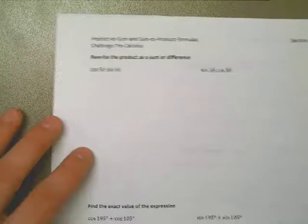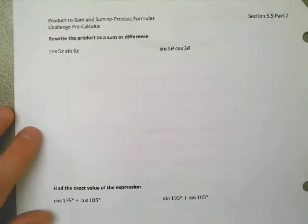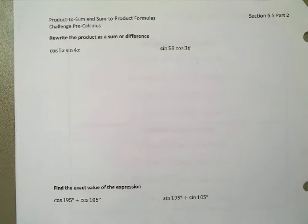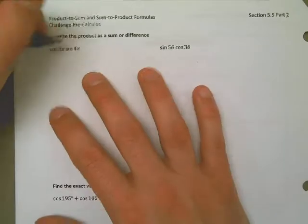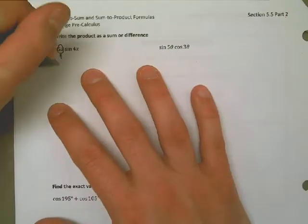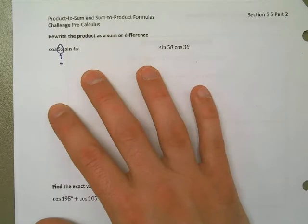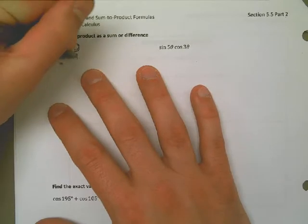First example, and I'm going to draw on this. I'm going to reference this stuff as I'm going along, but the first problem that we have says rewrite the product as a sum or difference. And so my first job is to determine what U and V are. Well, in this case, it looks like U is going to be 5X, and it looks like V is going to be 4X.